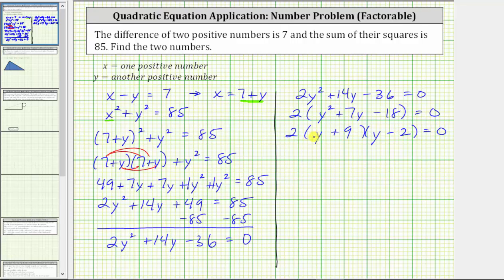This product is equal to zero when y plus nine equals zero, or when y minus two equals zero. Solving these two equations for y, here we subtract nine on both sides, giving us y equals negative nine. Here we add two to both sides, giving us y equals two.